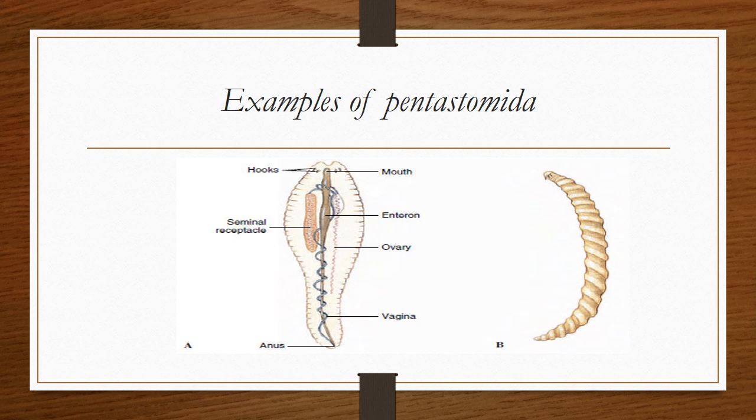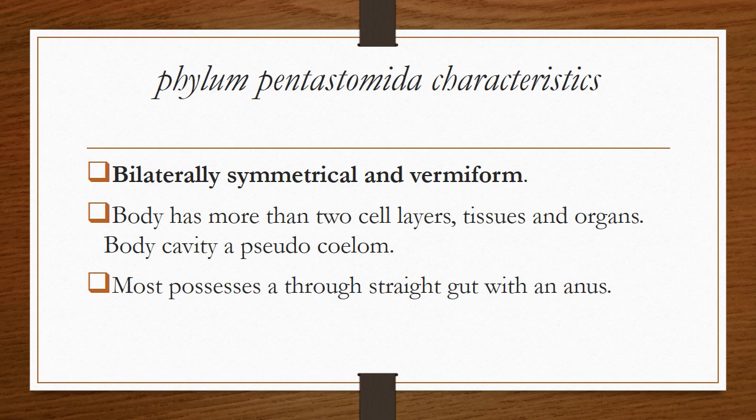An example diagram of Pentastomida shows the following parts: hooks, seminal receptacle, mouth, enteron, ovary, vagina, and anus.